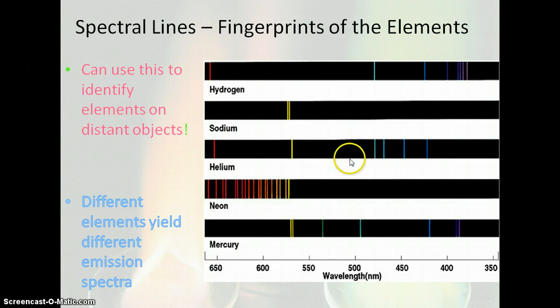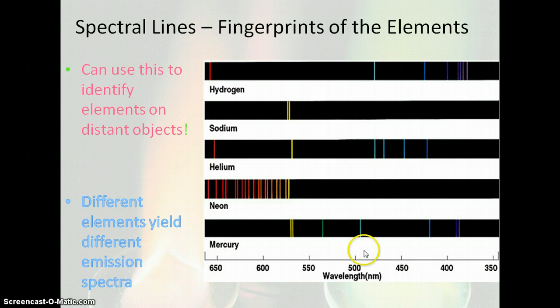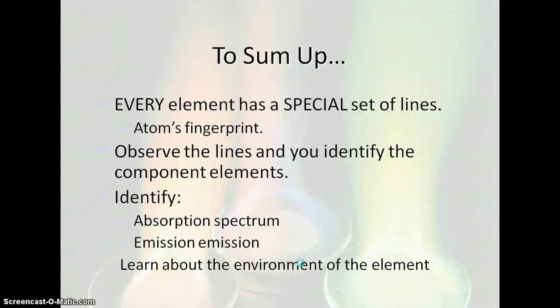Here's hydrogen, sodium, helium, neon, and mercury — you see they're all very different. Understand there are other wavelengths appearing outside the visible range for every element. Every element has a special set of lines — the atom's fingerprint. You can observe these lines and identify the component elements. Make sure you are able to identify absorption and emission spectra and how that can help you learn about the environment of the element.